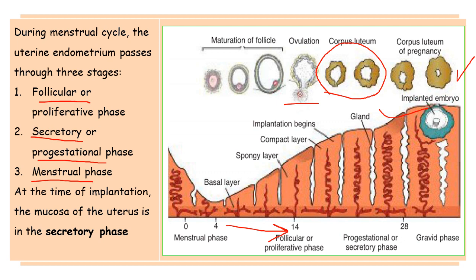The secretory phase begins approximately two to three days after ovulation in response to progesterone produced by the corpus luteum. After ovulation, the remaining follicle is converted into a yellow structure called the corpus luteum, which secretes progesterone. Under the influence of progesterone, the endometrium further grows to receive the incoming blastocyst. Implantation of the blastocyst causes development of a large corpus luteum of pregnancy, which produces large amounts of progesterone to maintain the pregnancy.